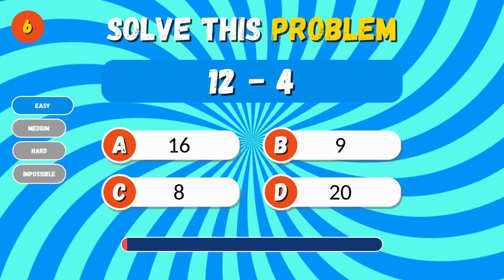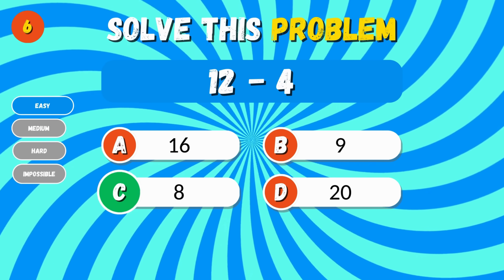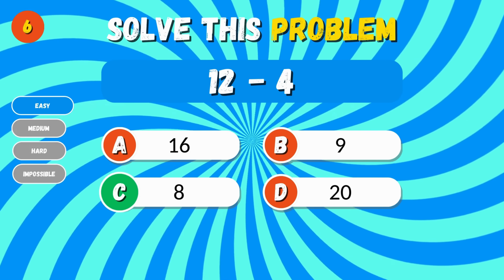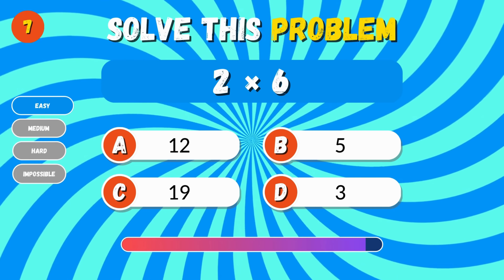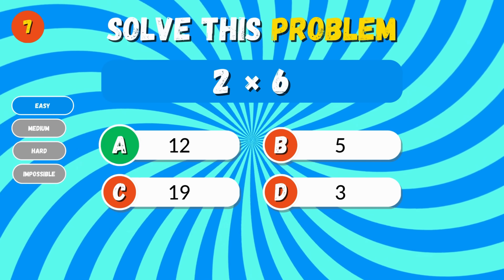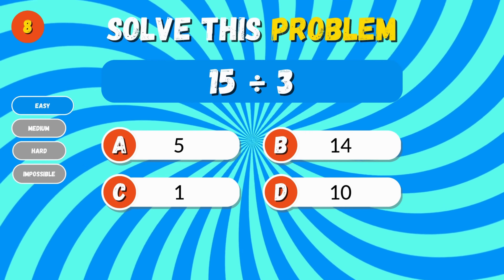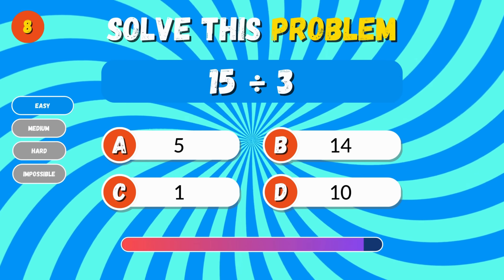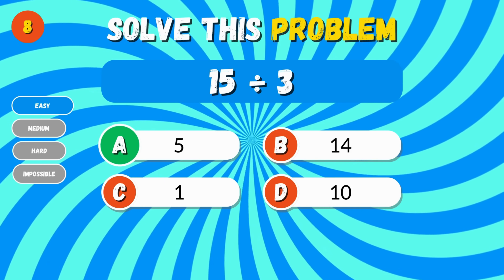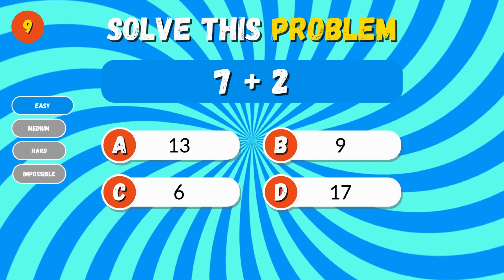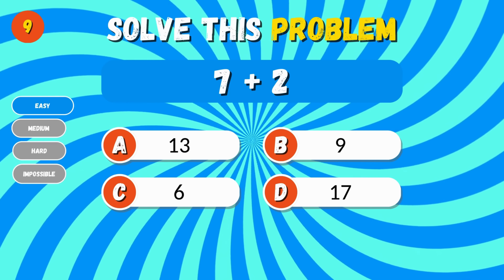12 minus 4. 20 minus 6. 20 minus 5. 22 minus 6. 12. 15 divided by 3. 5. 7 plus 2. 9.